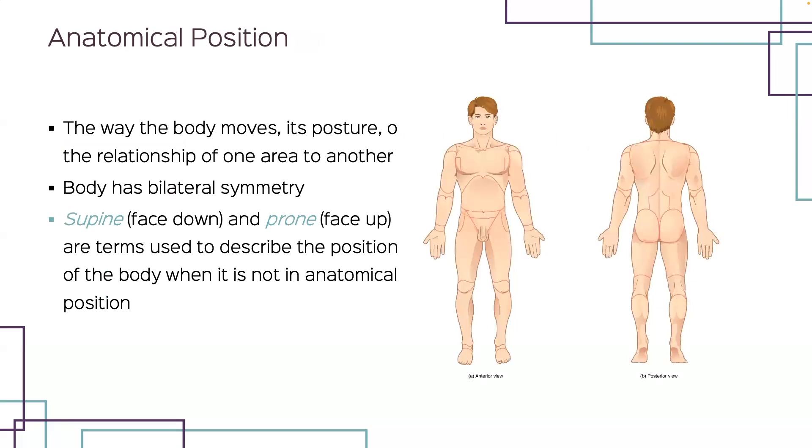Discussions about the body, the way that it moves, its posture, or the relationship of one area to another assume that the body as a whole is in a specific position called our anatomic position. In this reference position, the body is in an erect or standing position with the arms at the sides and palms turned forward. The head also points forward as will your feet, which are aligned at the toe and set slightly apart.